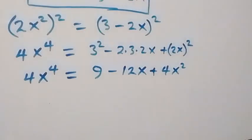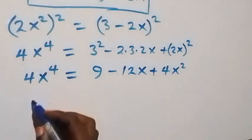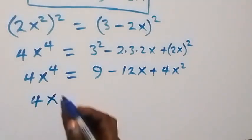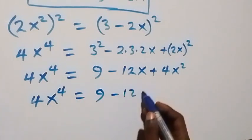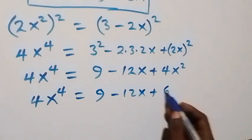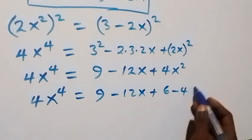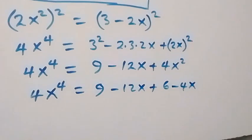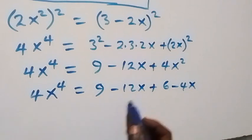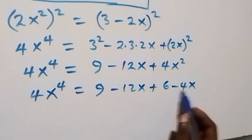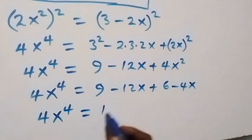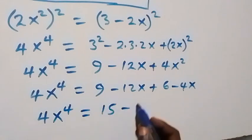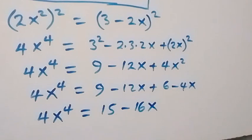We recall that 4x² = 6 - 4x, so substituting that in: 4x⁴ = 9 - 12x + (6 - 4x). Adding like terms: 9 + 6 = 15 and -12x - 4x = -16x. So 4x⁴ = 15 - 16x.